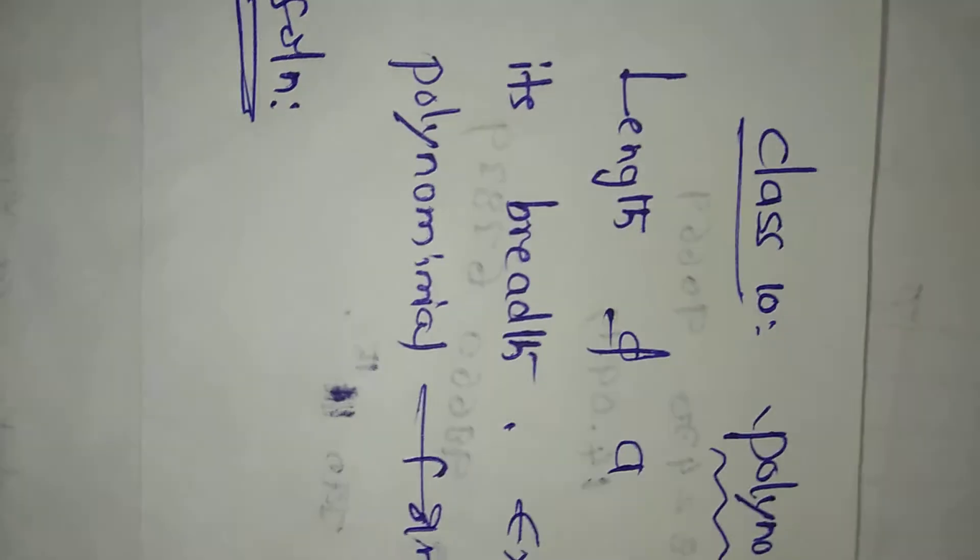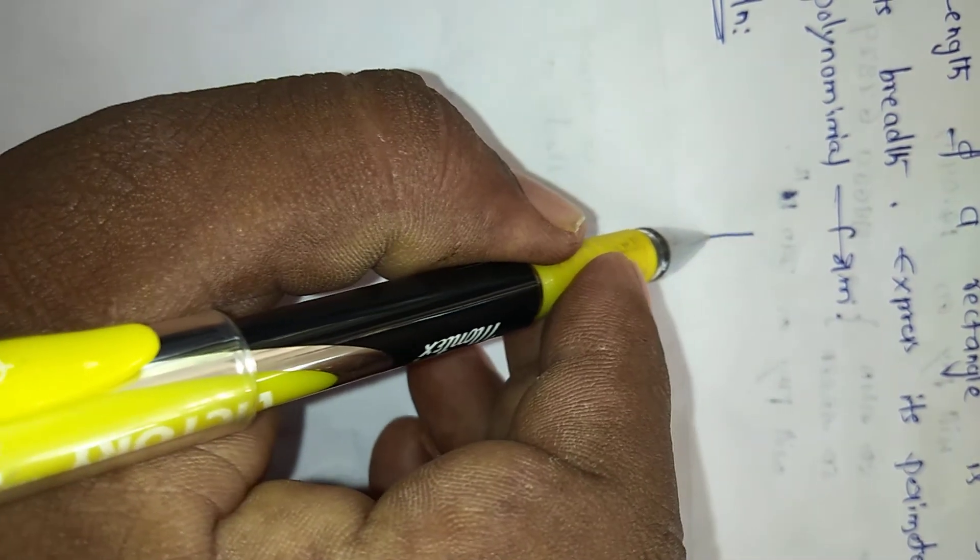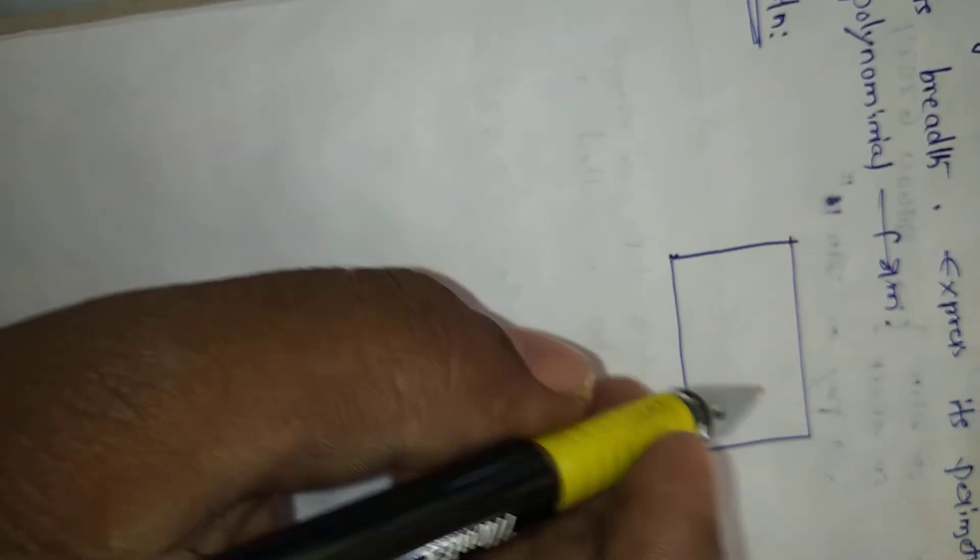The question is: length of a rectangle is 5 units more than its breadth. Express its perimeter in polynomial form. Solution: first we have to draw the rectangular shape. This is length, this is breadth.